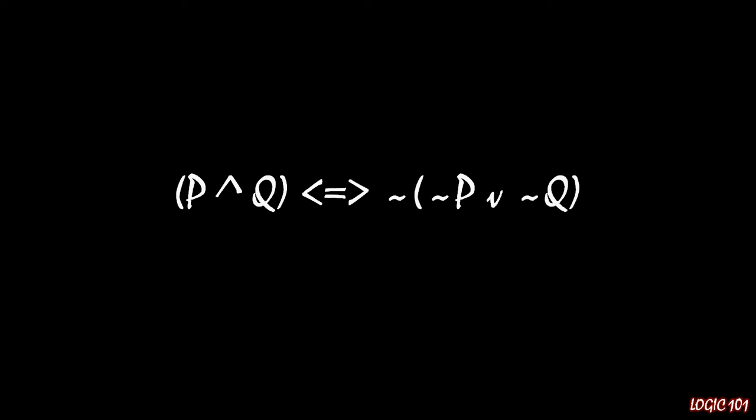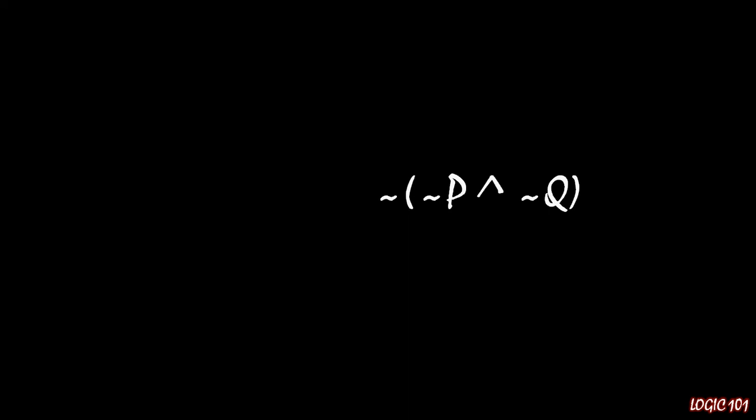Now we want to learn about the other half of De Morgan's Rule, and that half deals with this expression: not (not p and not q). Take a moment, look at that, and use the same application of distributing the negation that we did last time to figure out how we can rewrite this in a much simpler way. Go ahead and pause this lecture, think about it, and write your guess in the comments.